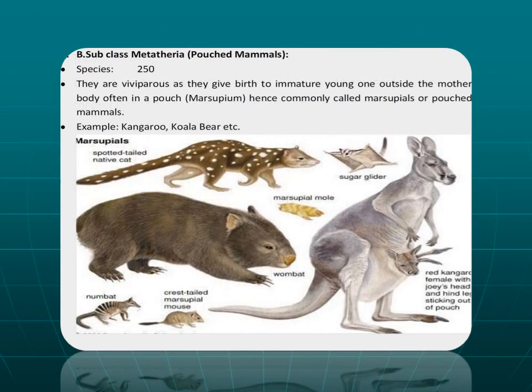The second subclass is Metatheria, also known as marsupials or pouched mammals. About 250 species of metatherians are found. They are viviparous, but their young ones are born immature and continue development outside the mother's body, often in a pouch called the marsupium. Therefore they are commonly known as marsupial or pouched mammals.